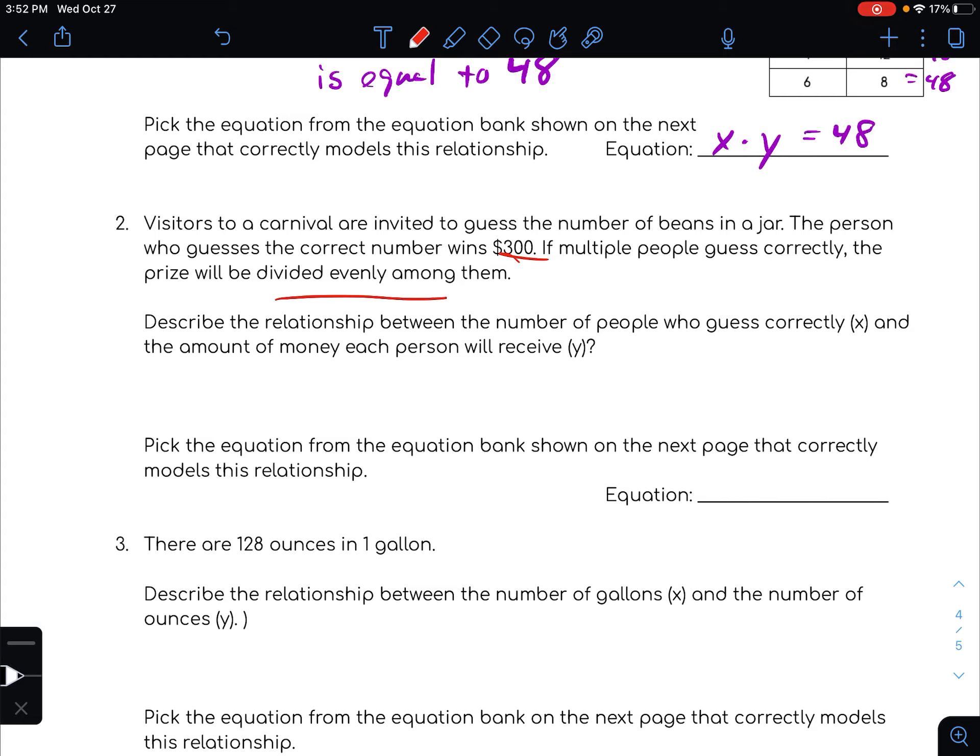Let's think about this. If we have one person, then that person wins $300, right? If we have two people win, then the $300 is divided evenly so each person would get $150. If we have three people, $300 would have to be divided by three and each person would get $100.